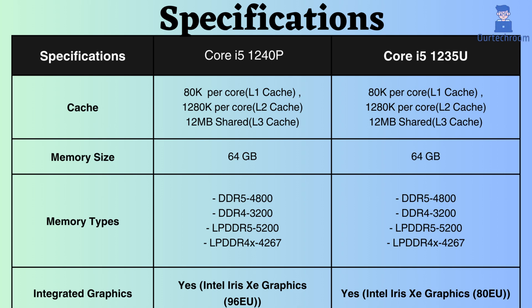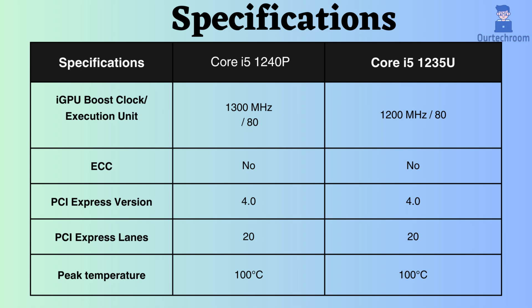Integrated graphics are supported by both processors. However, the graphics for the Core i5-1240p are more advanced, featuring a frequency of 1,300 MHz and 96 execution units, whereas the Core i5-1235u supports 1,200 MHz with 80 execution units. Consequently, the Core i5-1240p outperforms the Core i5-1235u in graphical tasks.